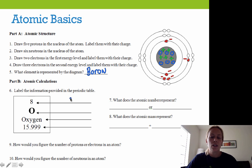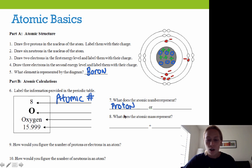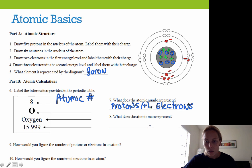For atomic calculations, you need to be able to read the information off the periodic table. The number up here is what we refer to as the atomic number, and the atomic number represents the number of protons found in the nucleus. It also represents the number of electrons. When writing protons and electrons, I also like to include their charge, just so I can remember that those are two charged subatomic particles.